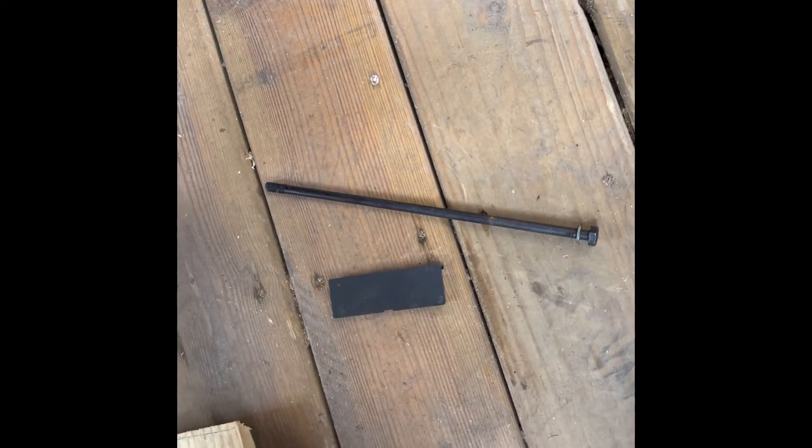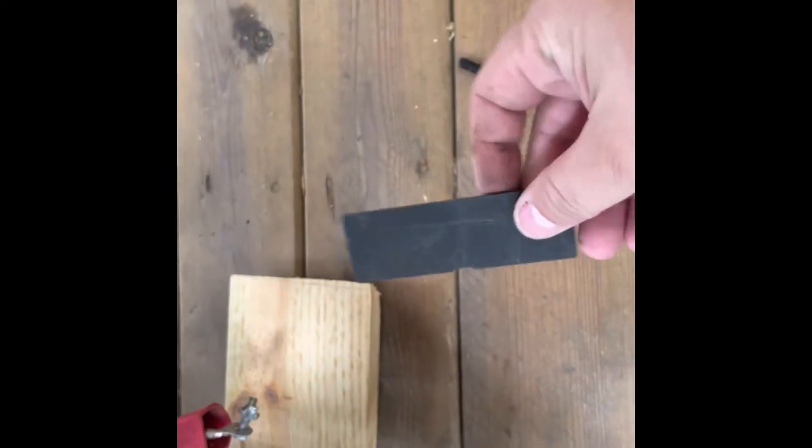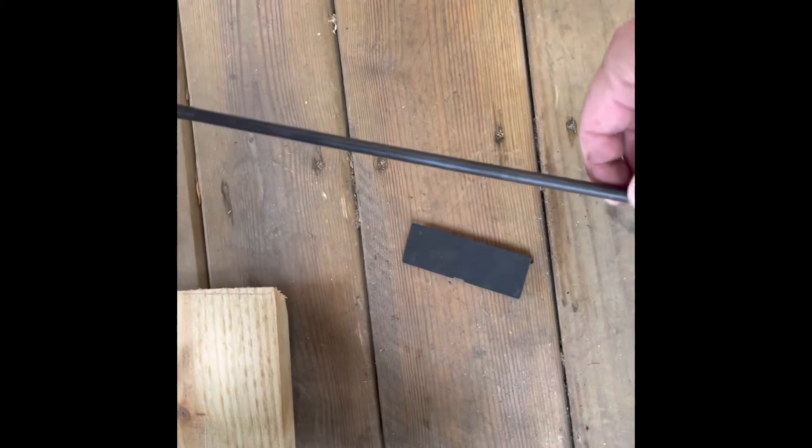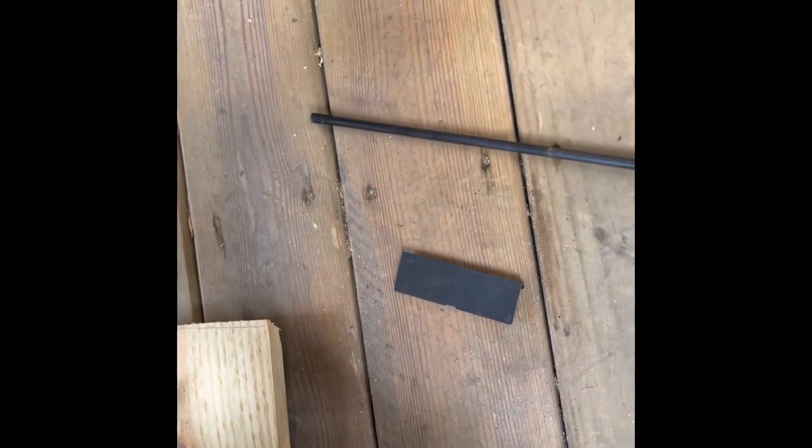I went down to the cabin to move the generator and noticed that this plastic plate was laying on the ground when I moved the generator, and this bolt was falling out from underneath.